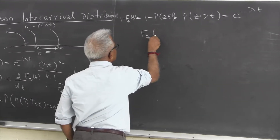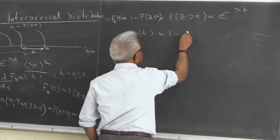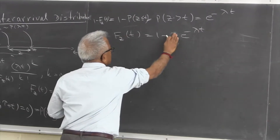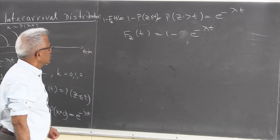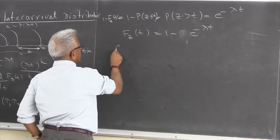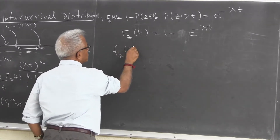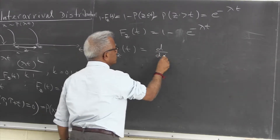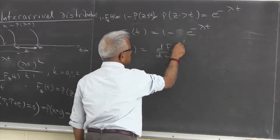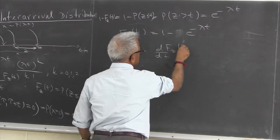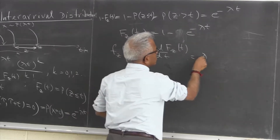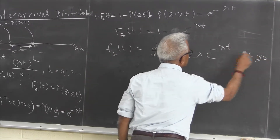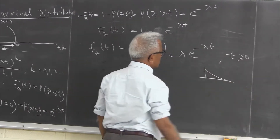So the distribution function Fz of t is 1 minus e raised to minus lambda t. If I take the derivative of this with respect to t, I get the density function. Lambda comes out, and we get lambda e raised to minus lambda t, for t positive — and this is the exponential density function.